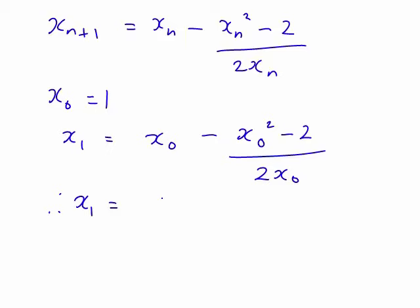So, x₁ = 1 - (1² - 2)/(2 × 1). Make sure you're careful here, that minus sign affects everything on the numerator. You might even want to put a bracket around there to make sure you don't make any careless errors.